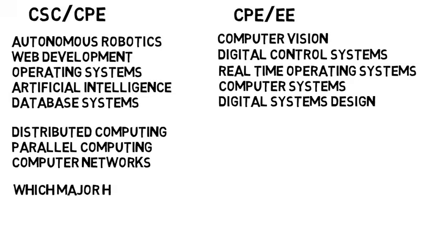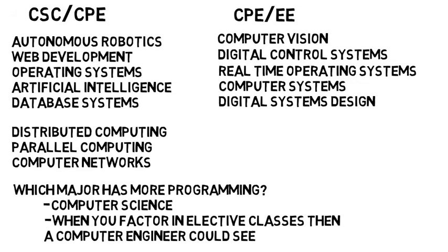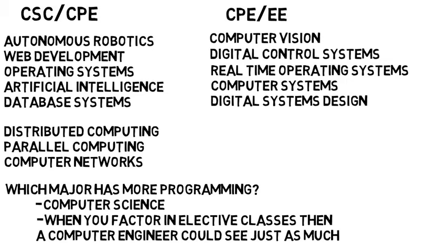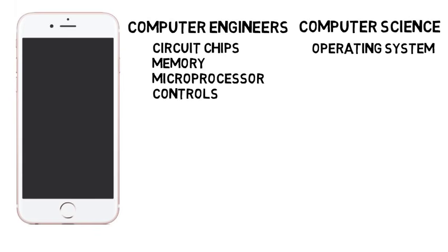If you're curious about which major has more programming, they are honestly extremely close, but computer scientists typically have just a little more because computer engineers go off to take circuits and electronics which don't involve programming. But when you factor in elective classes, then a computer engineer could see just as much. Just remember that's not just what these majors are about. If you want a basic real-world example, think of your phone. Lots of engineers have put in work to design that phone. Computer engineers worked on the circuit chips, the memory, the microprocessor, and controls, whereas computer scientists would write the operating system, or iOS for the iPhone users, they write the code for the applications, and come up with the best encryptions to secure our sensitive information.